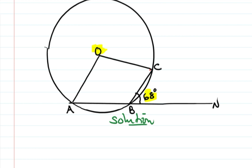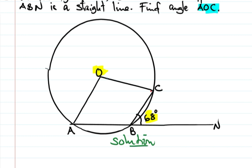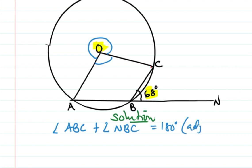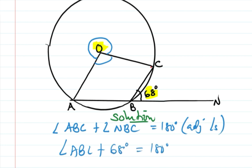Angle AOC here would be a reflex angle — the opposite angle. Now, angle ABC is what we need. Because ABN is a straight line, we have adjacent angles, so angle ABC plus angle CBN equals 180 degrees.